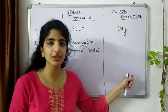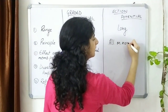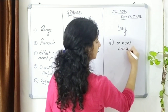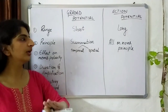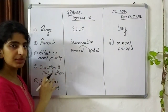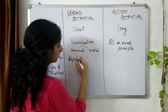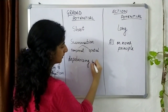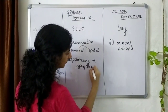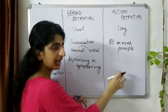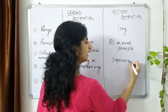An action potential, on the other hand, works on the all-or-none principle — it will either occur or it won't at all. The effect on membrane polarity also differs: a graded potential can be depolarizing or hyperpolarizing, whereas an action potential will always be depolarizing.